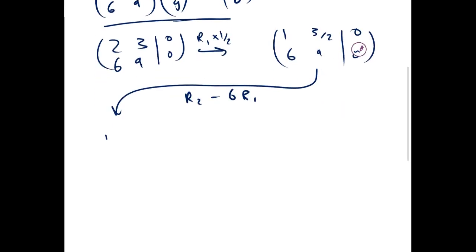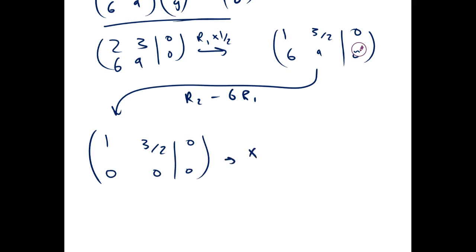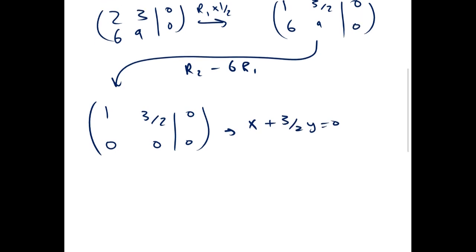And we get 1, 3 halves, 0, 0, 0. This tells us that if x plus 3 halves y equals 0, then the vector is in the kernel.